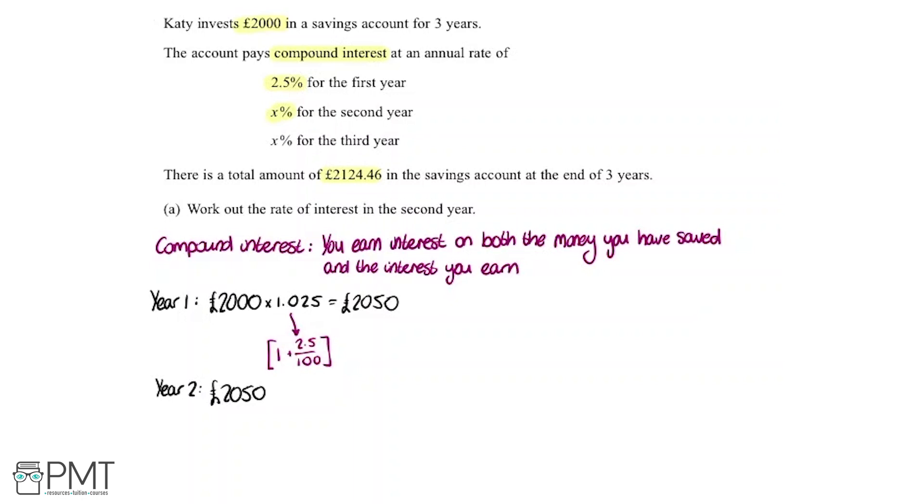We're going to write it in using this formula thing. So we're going to multiply by 1 plus the percentage, so in this case, it's x divided by 100. Remember these brackets here because we're multiplying all of this by this.